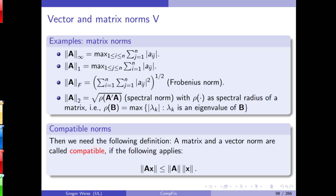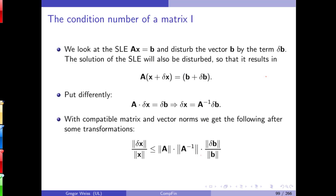So these are norms — we have them for vectors, functions, and matrices. We've already talked about compatible norms, meaning that if you have a matrix norm and a vector norm, they can sometimes be compatible, meaning a certain inequality applies. And then we came to the application of these concepts: the condition number of a matrix.